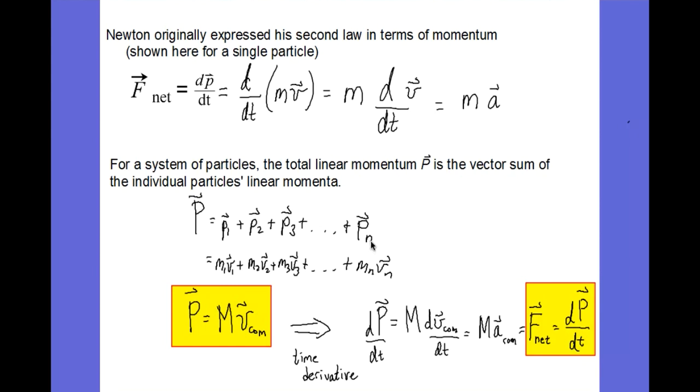So the individual momenta of every particle that makes up the system of particles. So P1 plus P2 plus P3, et cetera, all the way out to N particles. And I'll replace the momentum of particle one with the mass of particle one times the velocity of particle one, and the momentum of particle two with the mass of particle two times the velocity of particle two, and so on.